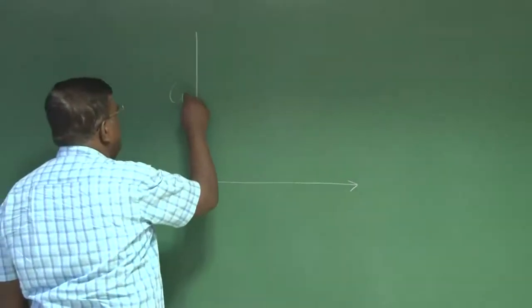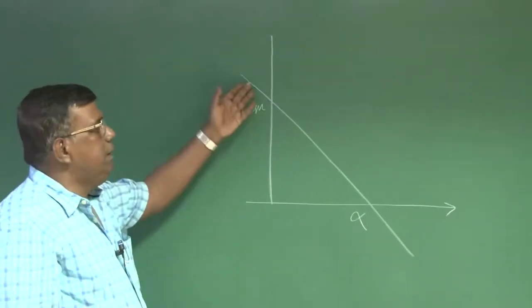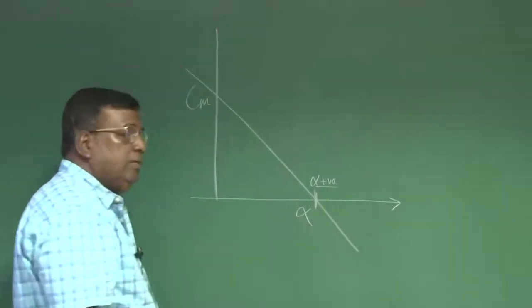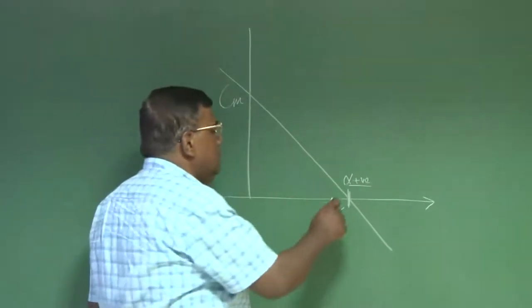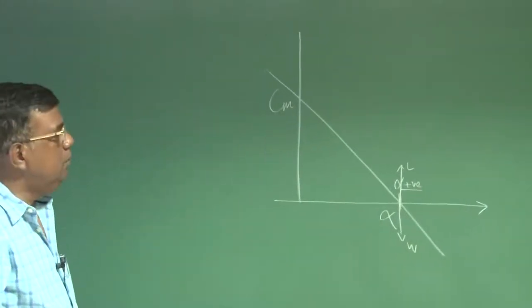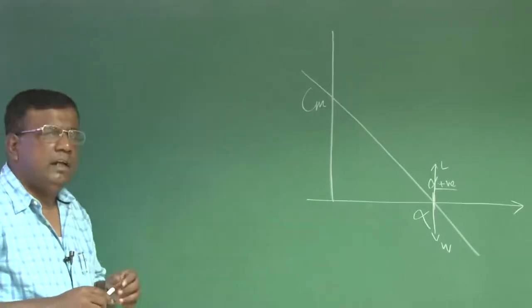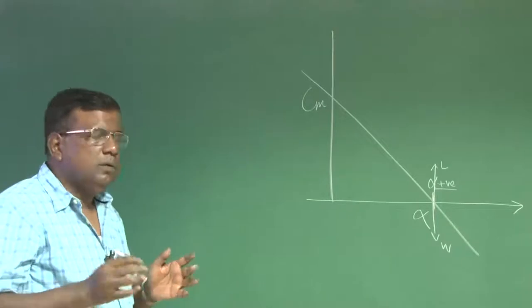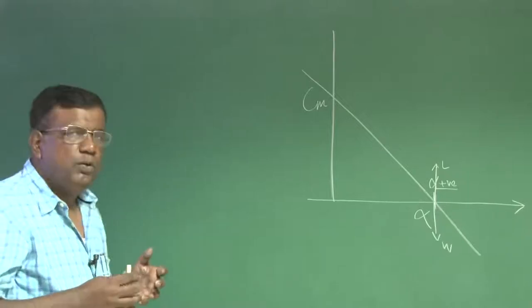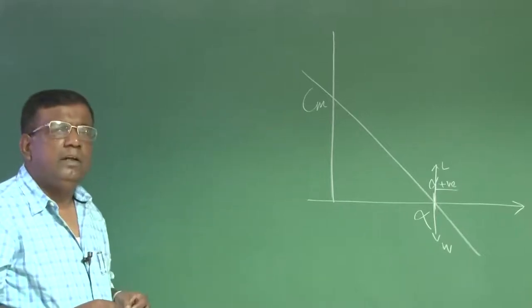What we recall was, if it is Cm pitching moment coefficient versus alpha, I will prefer my variation of Cm versus alpha to be like this, so that I have an alpha positive sufficient enough for a given dynamic pressure to produce enough lift to balance the weight. For a designer, we use that information and try to visualize this basic understanding through simplistic formulation which can directly tell me what I should do as far as designing the various components of the airplane which are contributing to stability and trim.